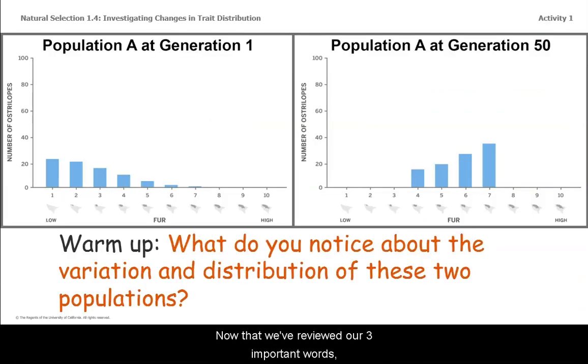Now that we've reviewed our three important words, what do you notice about the variation and distribution of these two populations? Take a moment and write it down or check in with whoever you are talking with. What do you notice?